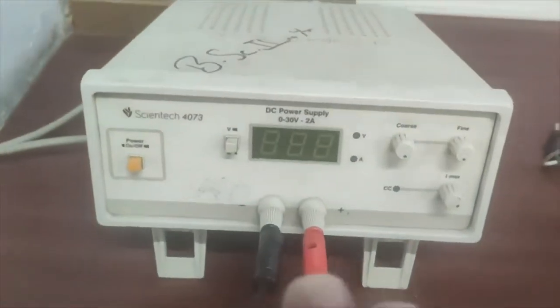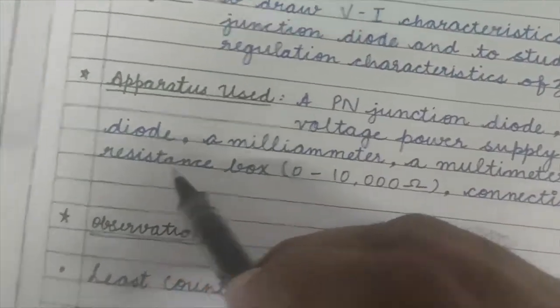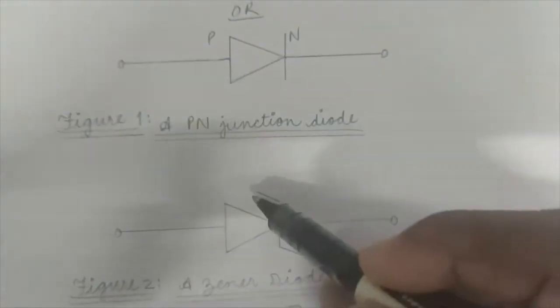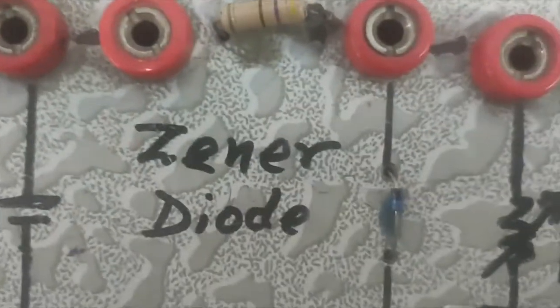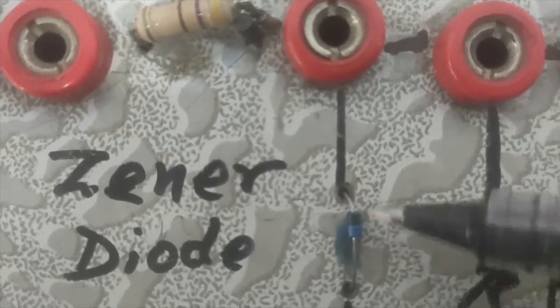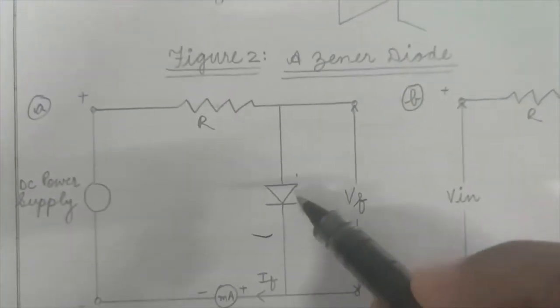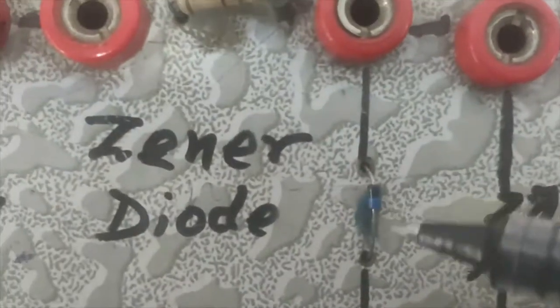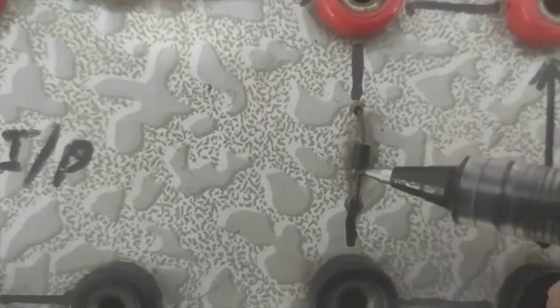We also need a low voltage power supply — here we have a 0 to 30 volt supply. Then we need a Zener diode. The representation of the Zener diode is slightly different from the PN junction diode — this line is now bent. Here also this is the P-type and this is the N-type. In the circuit, for the Zener diode, the P-type and N-type are placed in reverse mode. So this is my Zener diode and this is my PN junction diode.